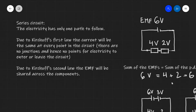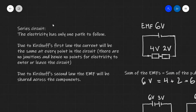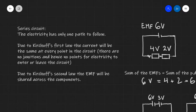The circuit we looked at just before is an example of a series circuit. In such a circuit, the electricity has only one path to follow. For instance, the electrons, when they move from the negative terminal, can be seen to have only a single path to follow throughout this circuit. There are no junctions and there's nowhere for the electricity to go but along the wire.